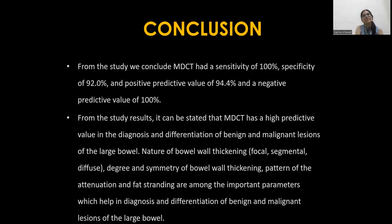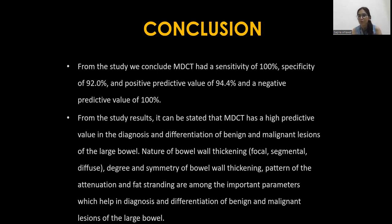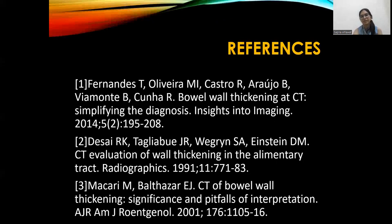In conclusion, MDCT showed a sensitivity of 100%, specificity of 92%, positive predictive value of 94.4%, and negative predictive value of 100%. From the study results it can be stated that MDCT has a high predictive value in the diagnosis and differentiation of benign and malignant lesions of the large bowel. The nature of bowel thickening — whether focal, segmental, or diffuse — along with degree and symmetry of thickening, pattern, attenuation, and fat stranding are among the important parameters that help in diagnosis and differentiation.